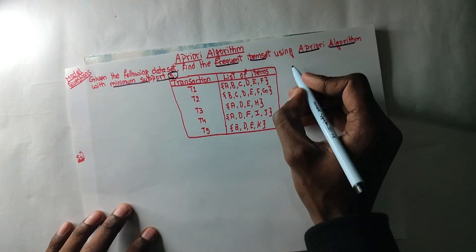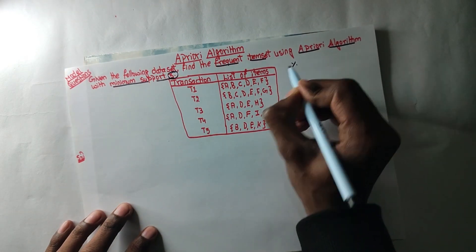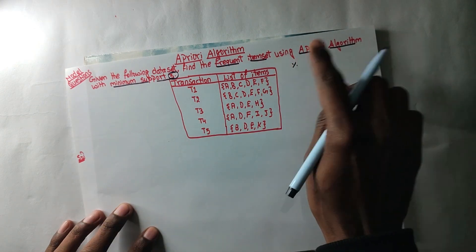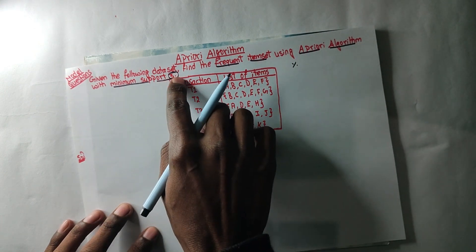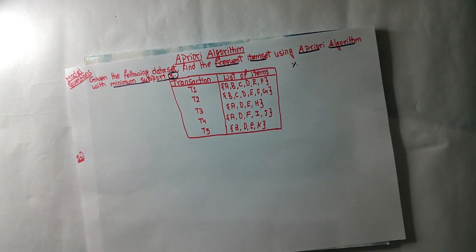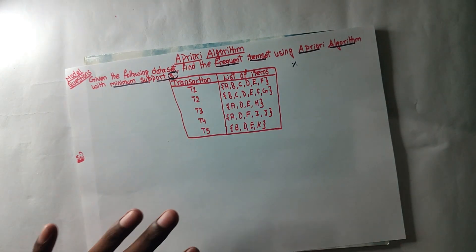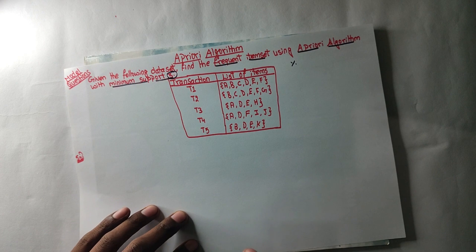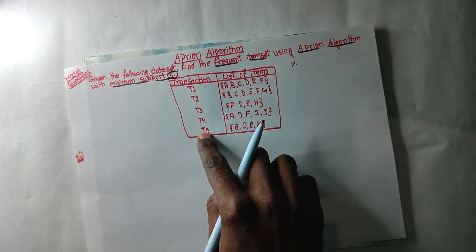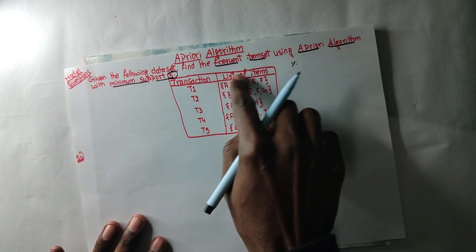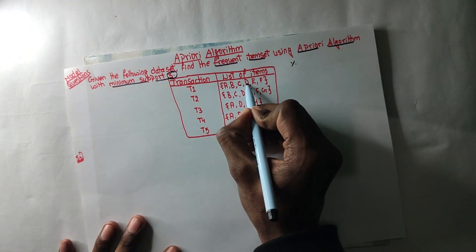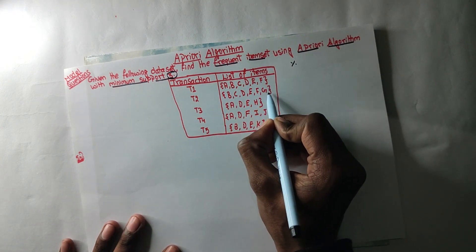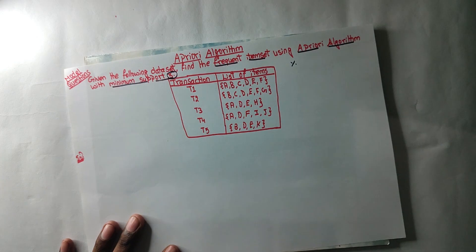If you give a percentage, you don't want to convert it to a percentage — then you give a direct question. So what do you do? Now, direct question. Transactions is 5. List of items: A, B, C, D, E, F, G, H, I, J, K, R.